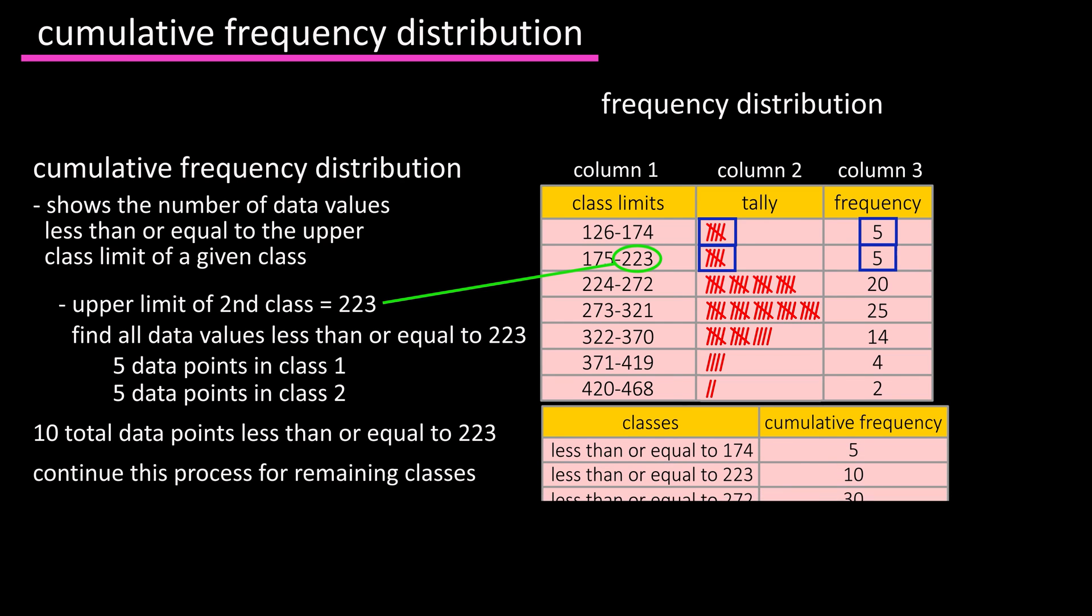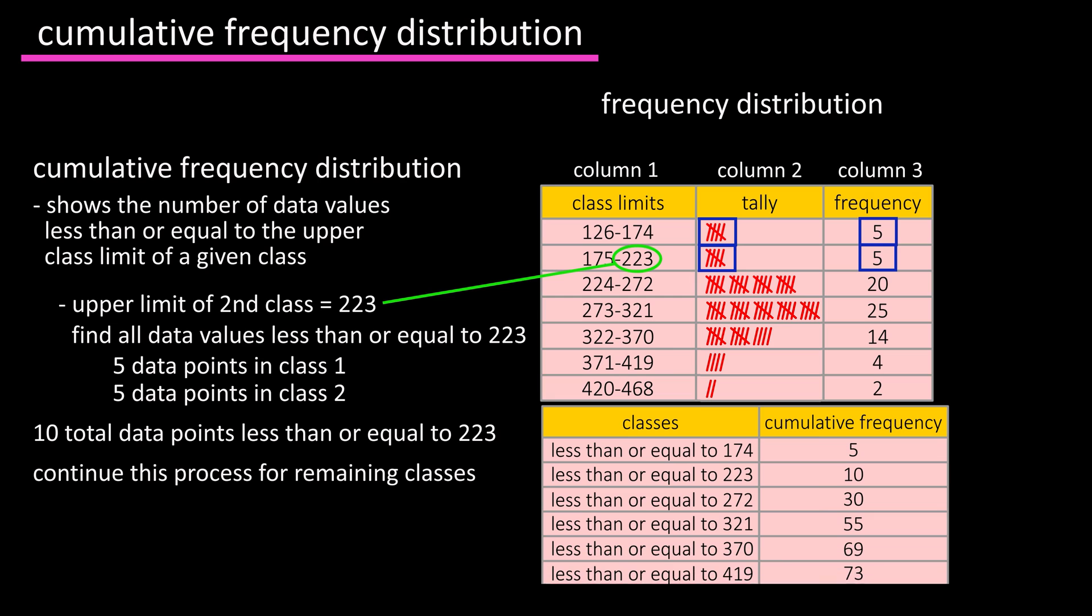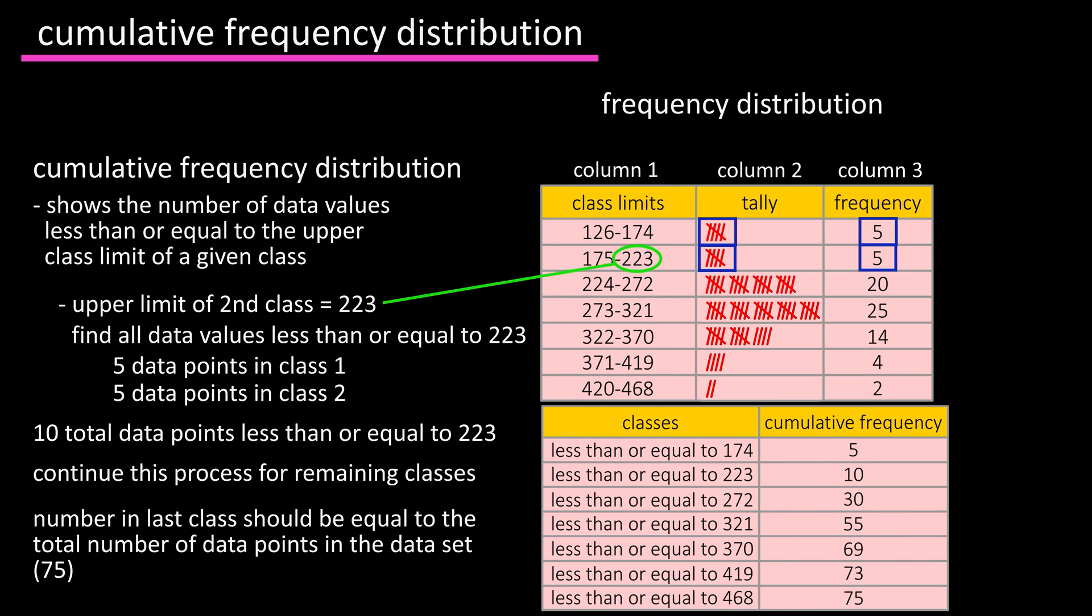And you would continue this process for the other five classes. Once you finished, the cumulative frequency number you have in the last class should be equal to the total number of data points in the data set. In this case, 75.